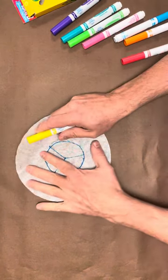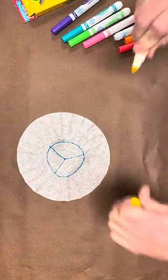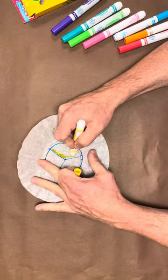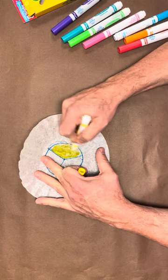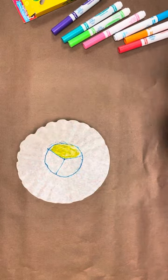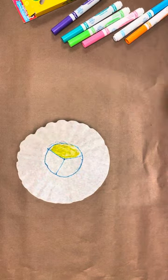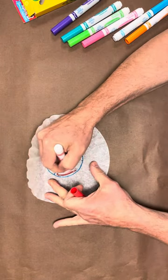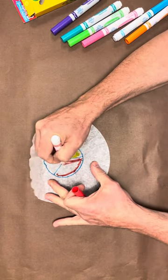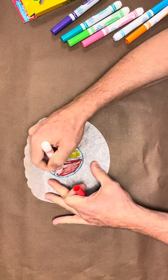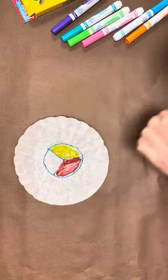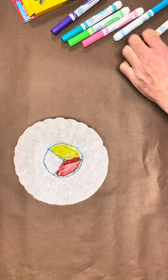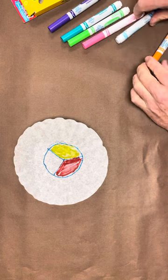Alrighty, so we got to color in these three sections. One of them is going to be yellow. Another is going to be red. Another is going to be blue.